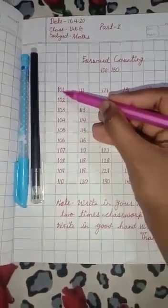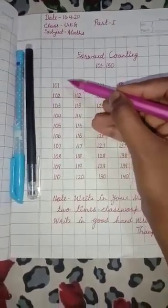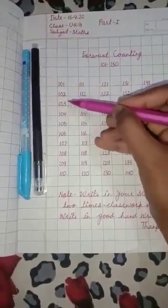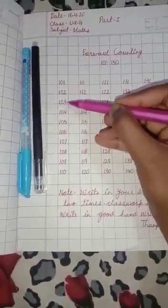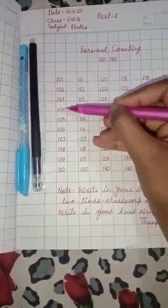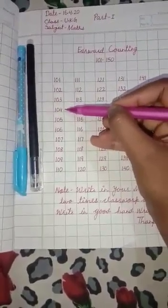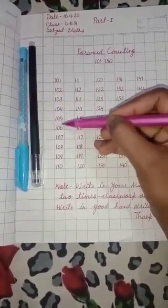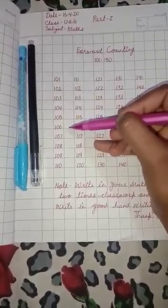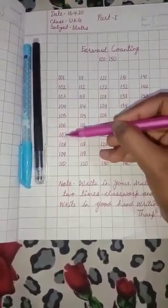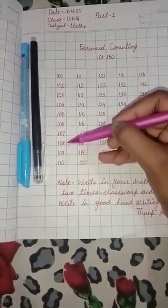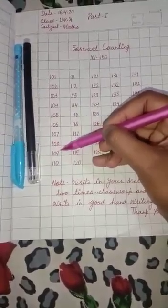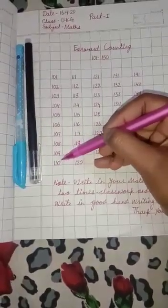1, 0, 1. 101. 1, 0, 2. 102. 1, 0, 3. 103. 1, 0, 4. 104. 1, 0, 5. 105. 1, 0, 6. 106. 1, 0, 7. 107. 1, 0, 8. 108. 1, 0, 9. 109. 1, 1, 0. 110.